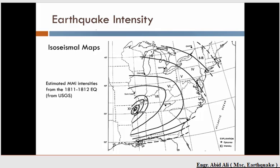One major advantage is that we can use old newspaper descriptions and personal journal accounts to back-calculate intensity estimates for historical earthquakes. For example, here is an estimated MMI intensity map from the 1811 and 1812 New Madrid earthquakes, based on general descriptions and newspaper accounts from the time. You can see exactly how energy dissipated with distance away from the source of the event.